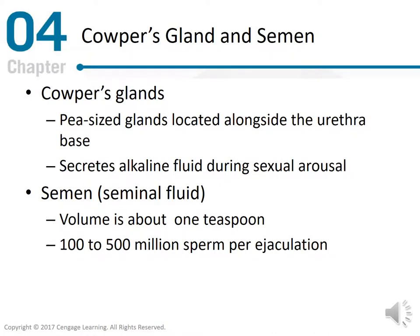The Cowper's glands are pea-sized glands located alongside the urethra base. These glands secrete alkaline fluid during sexual arousal. The semen or seminal fluid has a volume of about one teaspoon and contains 100 to 500 million sperm per ejaculation.